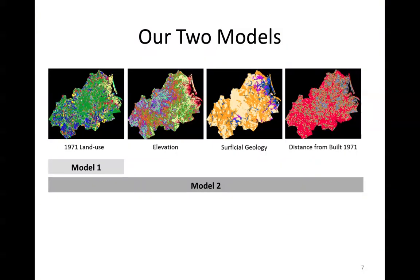For this exercise, we created two models to predict land cover in 1999. One using one driver variable, which is 1971 land use. The other model will add elevation, surficial geology, and distance from built in 1971. We will use these two models to illustrate how the soft output of our models can change and how we can evaluate those changes.